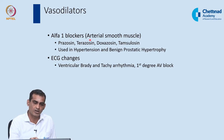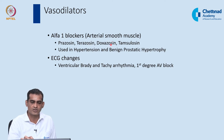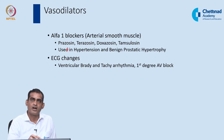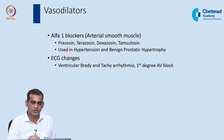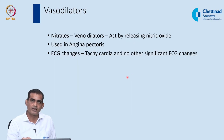Alpha-1 blockers — prazosin, terazosin, doxazosin, and tamsulosin — act on alpha-1 receptors in arterial smooth muscle. Tamsulosin and doxazosin are also used in benign prostatic hypertrophy, while prazosin is mainly used in systemic hypertension. They produce significant vasodilatation and blood pressure reduction. ECG changes include ventricular brady- and tachyarrhythmia and first-degree AV block.